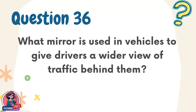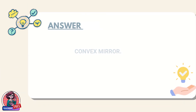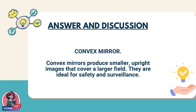Question 36. What mirror is used in vehicles to give drivers a wider view of traffic behind them? Answer: convex mirror. Convex mirrors produce smaller, upright images that cover a larger field. They are ideal for safety and surveillance.